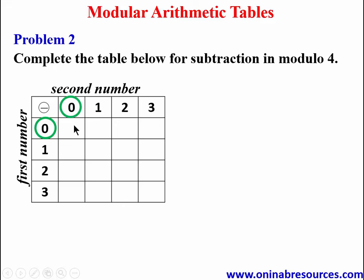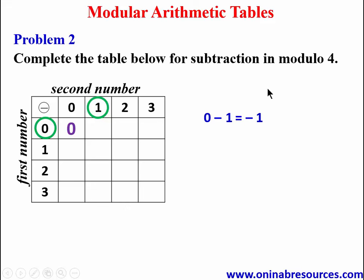Starting with 0 minus 0, which is 0. Then 0 minus 1 gives negative 1 — we cannot record a negative value here, so we convert it to positive by adding the modulus. Since it is modulo 4, we add 4: negative 1 plus 4 gives 3, so we enter 3 in that cell.